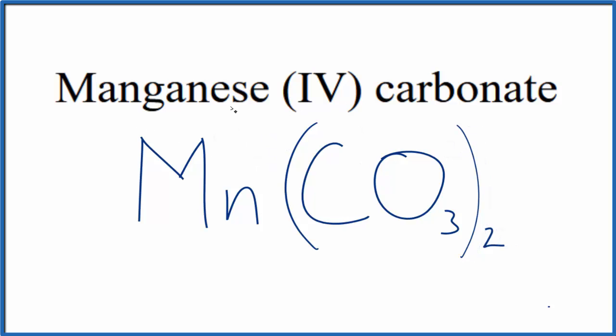If you wanted to write the name from the formula, you'd know that because each carbonate is 2-, and you have 2 of them, you'll have a 4- total. This will have to be manganese (IV). So you write the Roman numeral, manganese (IV), and then carbonate.